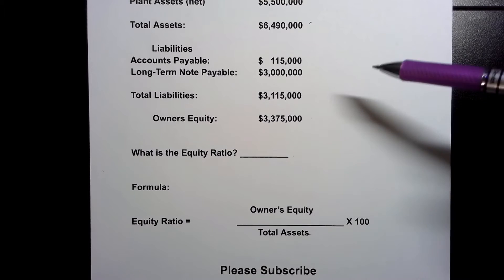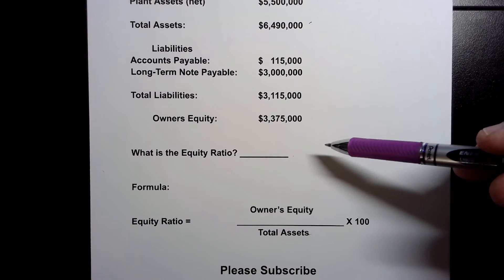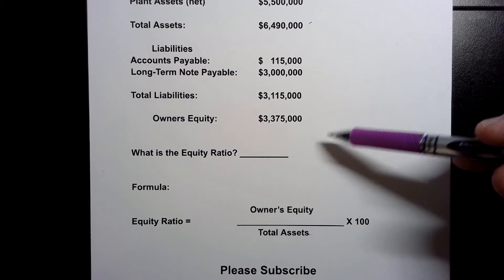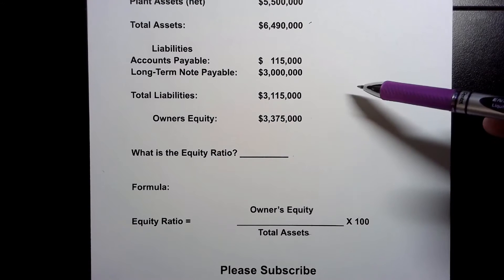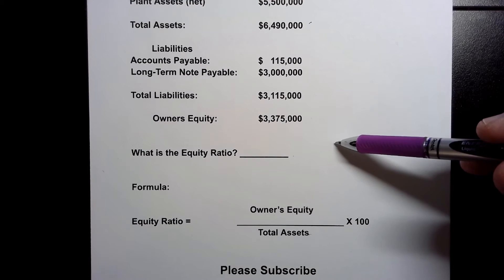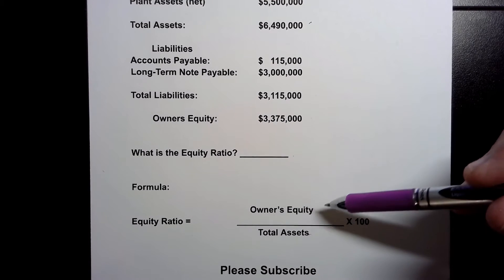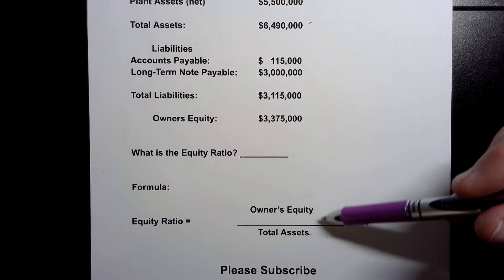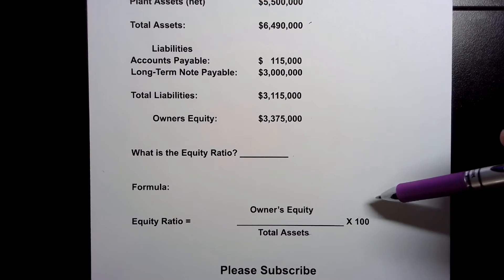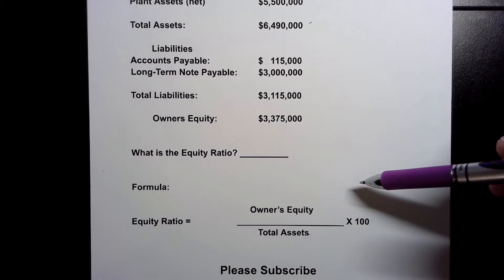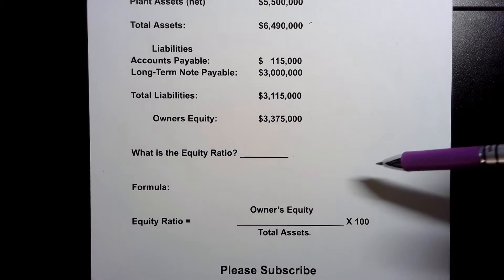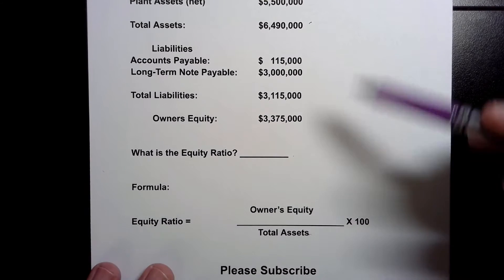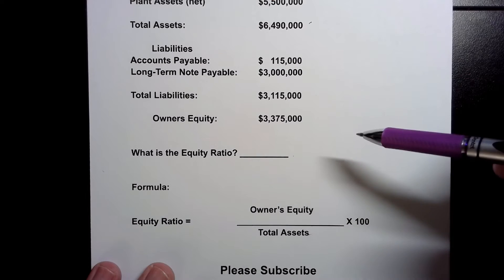This is the type of ratio that investors might use to determine the health of a company, and it determines how much of the assets are actually owned by the shareholders — essentially that's what we're calculating here. So this is the formula that we're going to use with the data above.